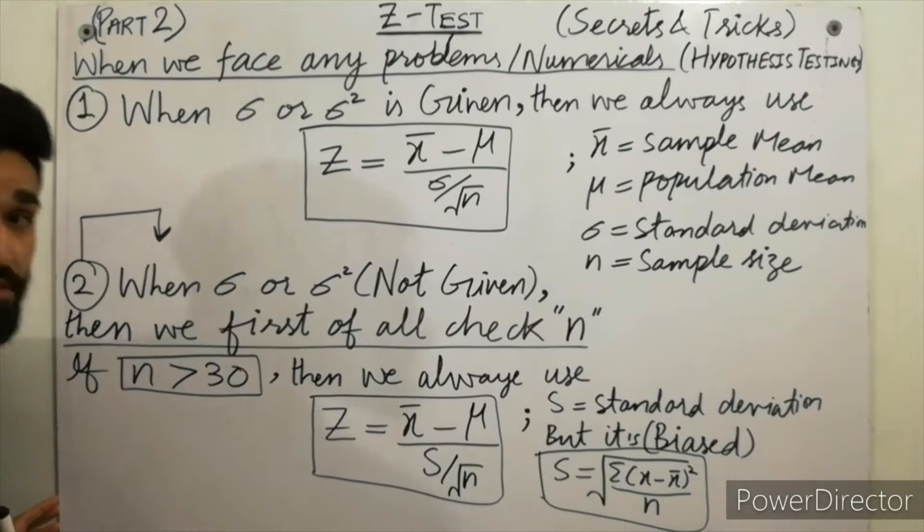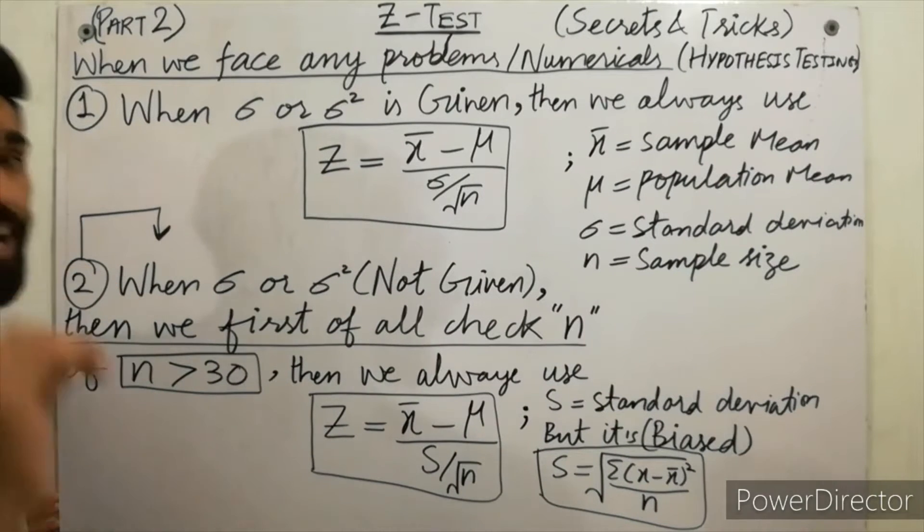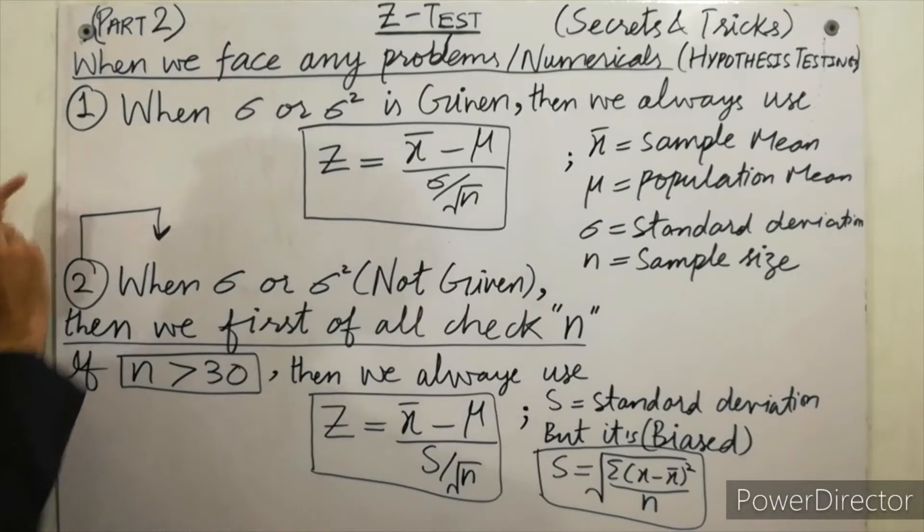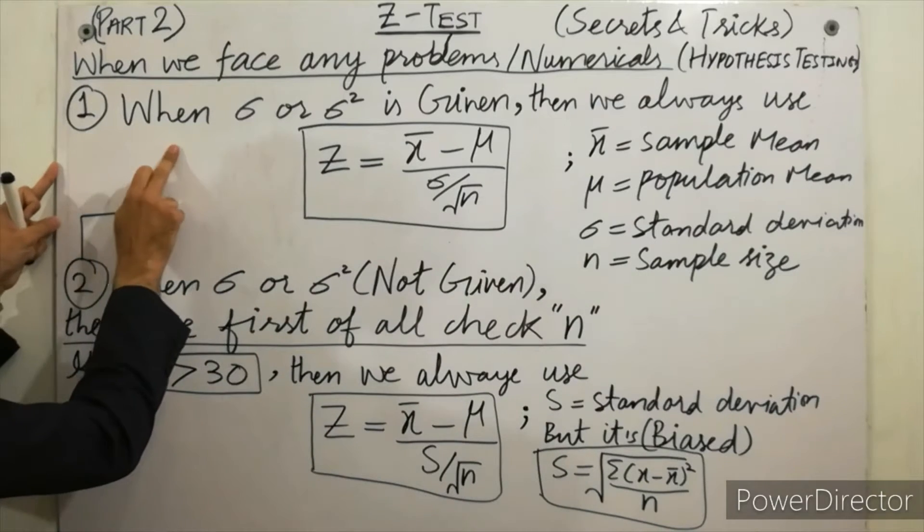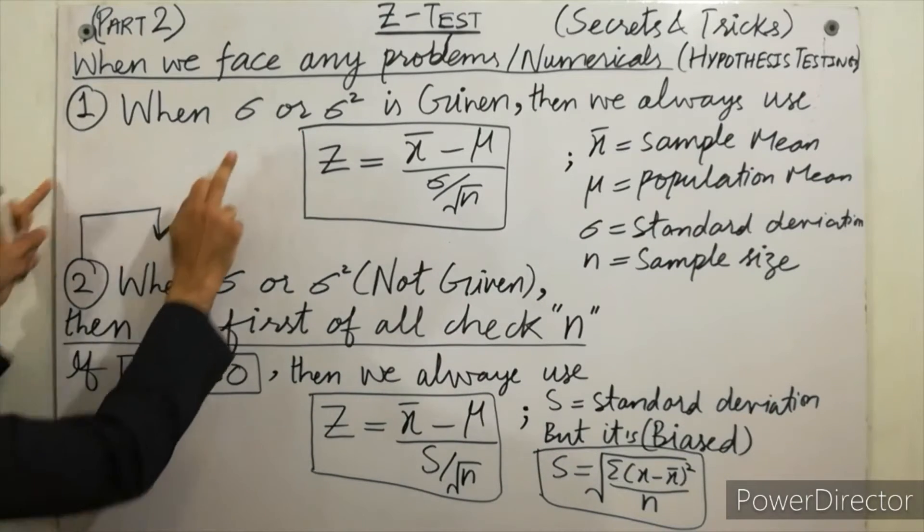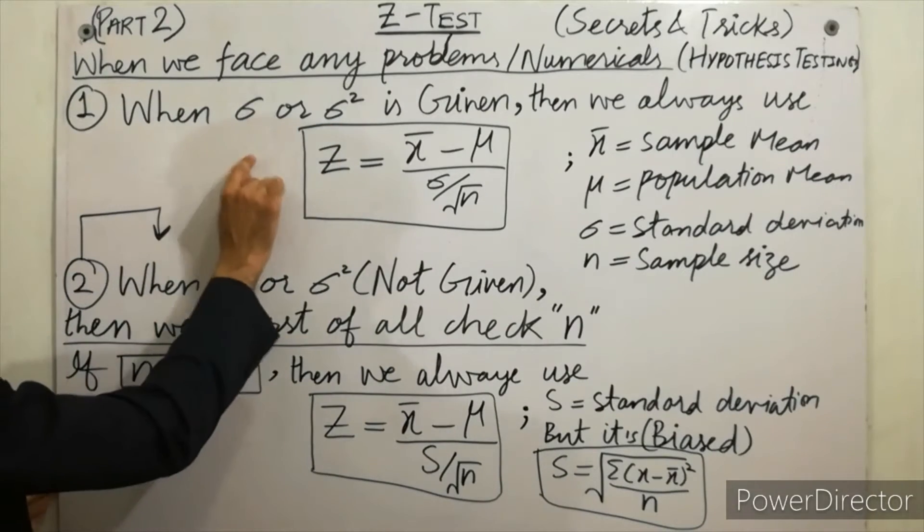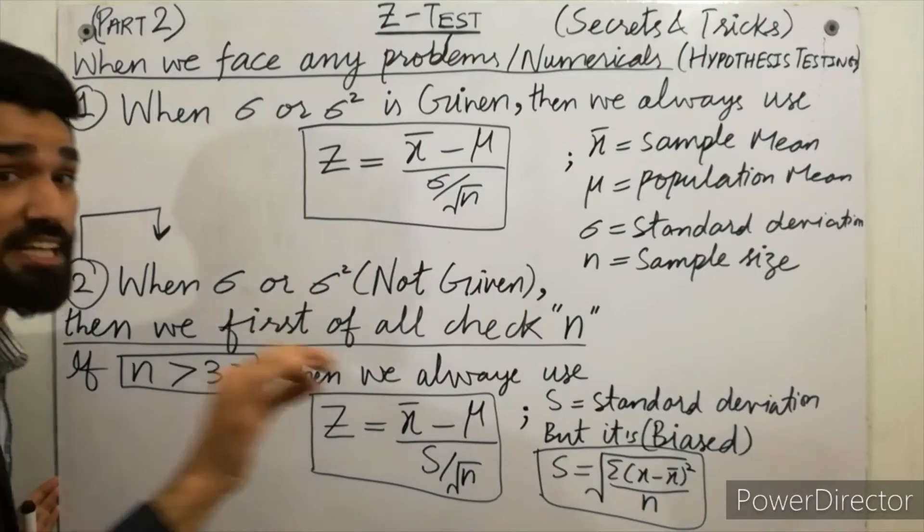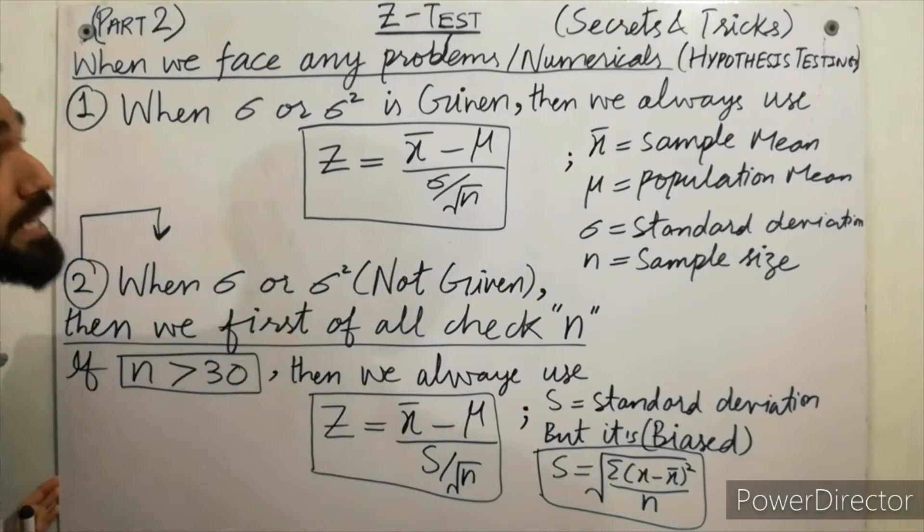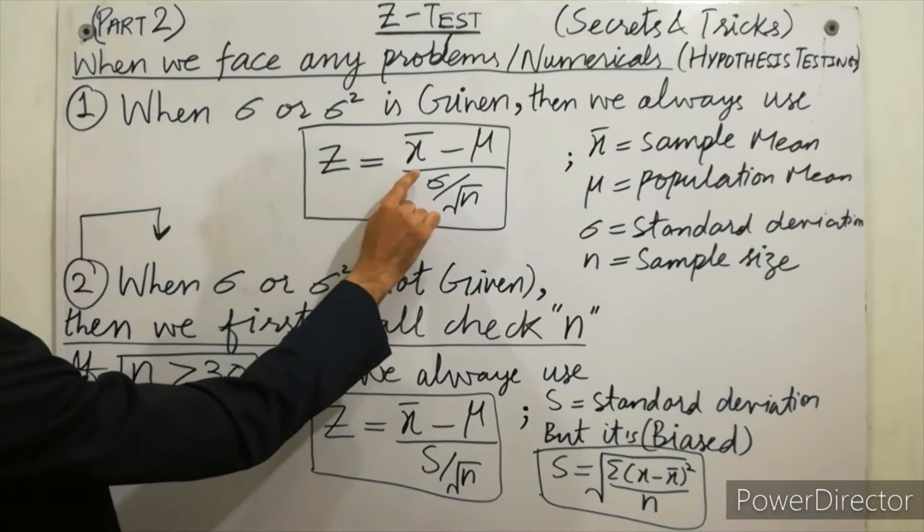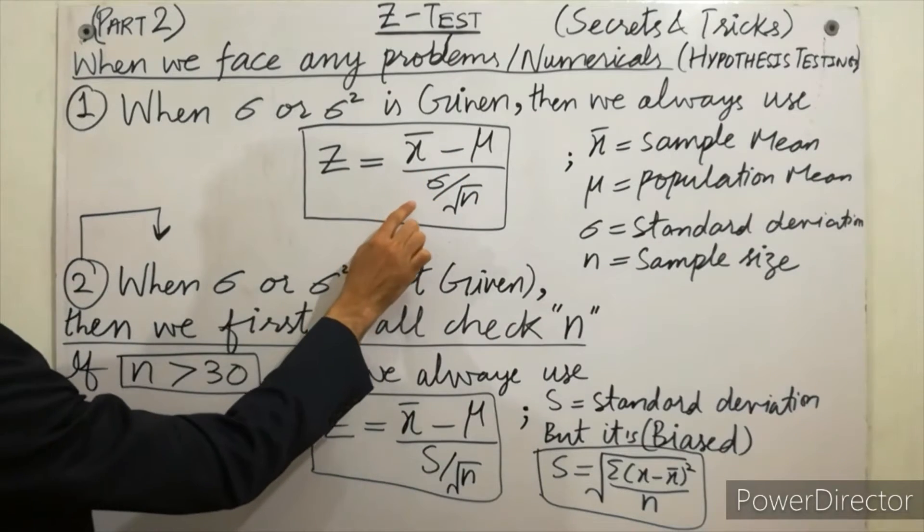When we face any problems of hypothesis testing, the first step is: when σ or σ² (sigma or sigma squared, the standard deviation) is given in the numerical problem, then we always use Z = (x̄ - μ)/(σ/√n).